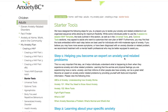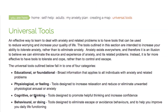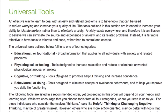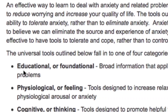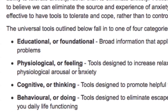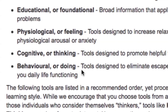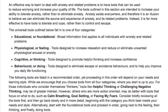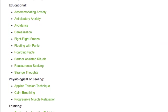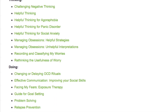After selecting tools from the Starter Tools list, you will link to Universal Tools. Here you will find a list of foundational Cognitive Behavior Therapy tools outlined in four primary categories: Educational or Foundational, Physiological or Feeling, Cognitive or Thinking, and lastly Behavioral or Doing Tools. The categories are listed in a recommended order, but proceeding in this order will depend on your needs and learning style. We suggest you choose tools from all four categories, but where to start is up to you.